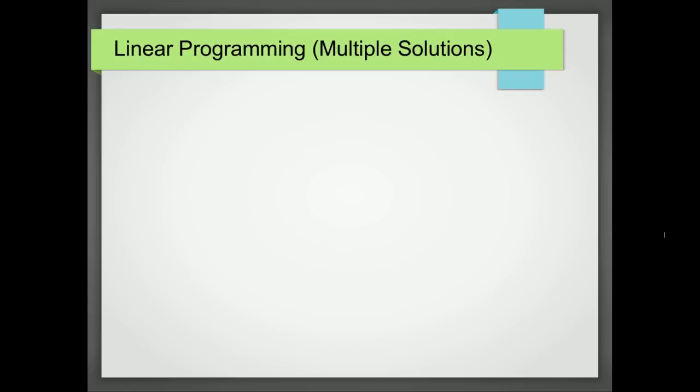In this tutorial, we're going to look at linear programming problems where there is more than one solution to the problem. So far, we've looked at solving linear programming problems by looking at the value of the objective function at the vertices of the feasible region, and we've taken the answer that has the highest value.